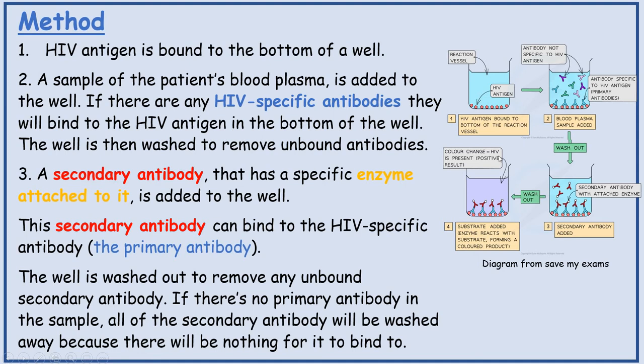The well is then washed to remove unbound antibodies. A secondary antibody that has a specific enzyme attached to it is added to the well. The secondary antibody can bind to the HIV-specific antibody — the primary antibody. The well is then washed to remove any unbound secondary antibody. If there is no primary antibody in the sample, all of the secondary antibody will be washed away because there will be nothing for it to bind to.